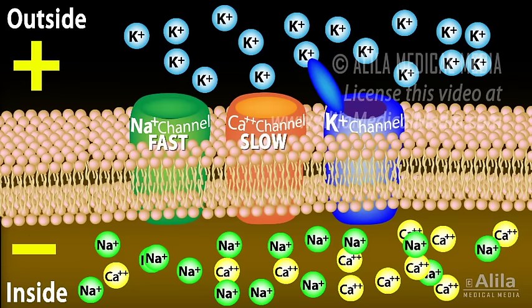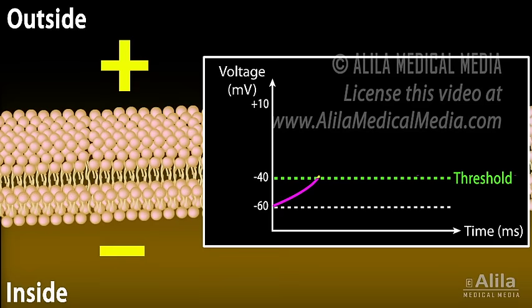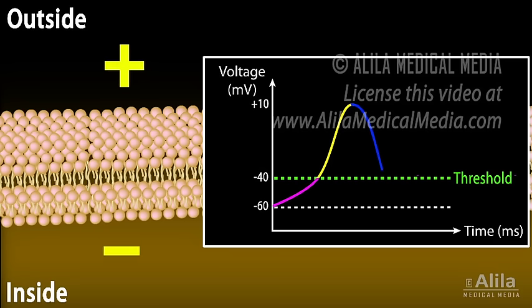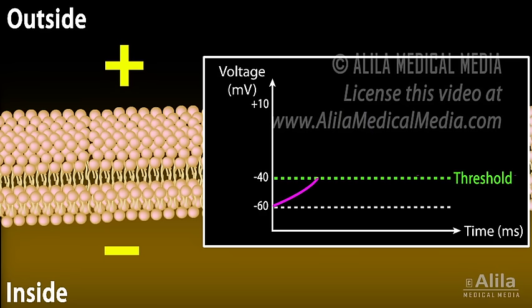They open at some values of membrane potential and close at others. When membrane voltage increases and becomes less negative, the cell is less polarized and is said to be depolarized. Reversely, when membrane potential becomes more negative, the cell is repolarized. For an action potential to be generated, the membrane voltage must depolarize to a critical value called the threshold.